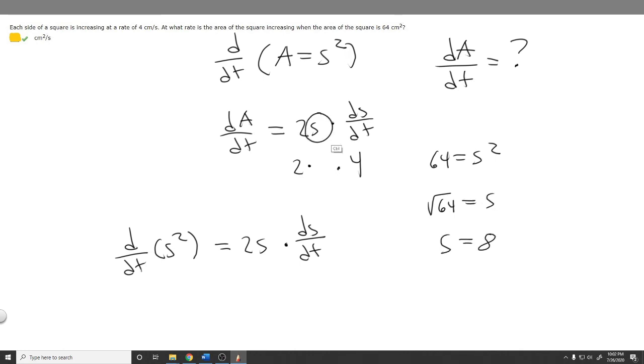So we can plug in 8 for S. And so now we have dA dt is equal to 2 times 8 times 4. And so 2 times 8 is 16, times 4 is 64. So dA dt is going to be equal to 64. And so that's going to be the answer to this problem, 64 centimeters squared.